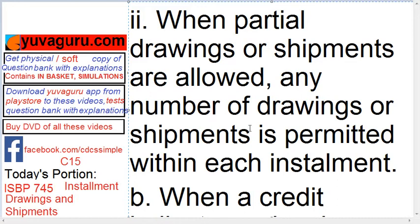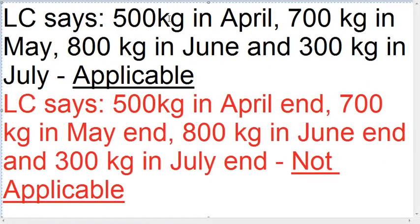Second point: when partial drawings or shipments are allowed, any number of drawings or shipments is permitted within each installment period. For example, the beneficiary can send 100 kg on 5th April and 100 kg on 10th April, making 500 kg total in April. Similarly for May, June, and July. You could even send 50 kg each day to make up 500 kg in April.